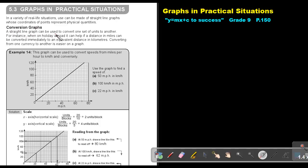Conversion graphs. A straight line graph can be used to convert one set of units to another. For instance, when on holiday abroad, it can help if a distance in miles can be converted immediately to an equivalent distance in kilometers. Converting from one currency to another is easier on a graph. Example 14. This graph can be used to convert speed from miles per hour to kilometers per hour and conversely.